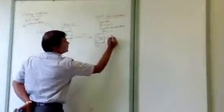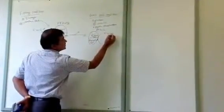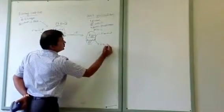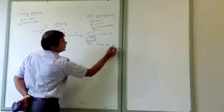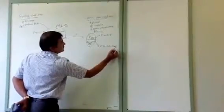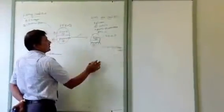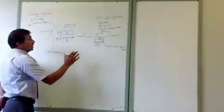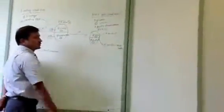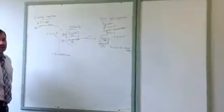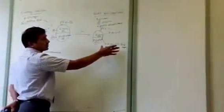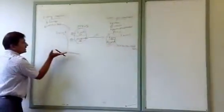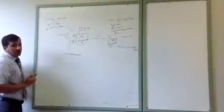PFK2 kinase converts fructose 6 phosphate into fructose 2,6 bisphosphate. So fructose 2,6 bisphosphate concentration is increased in the presence of insulin because the kinase part is active, whereas fructose 2,6 bisphosphate concentration decreases in fasting condition because the phosphatase part of PFK2 is active.